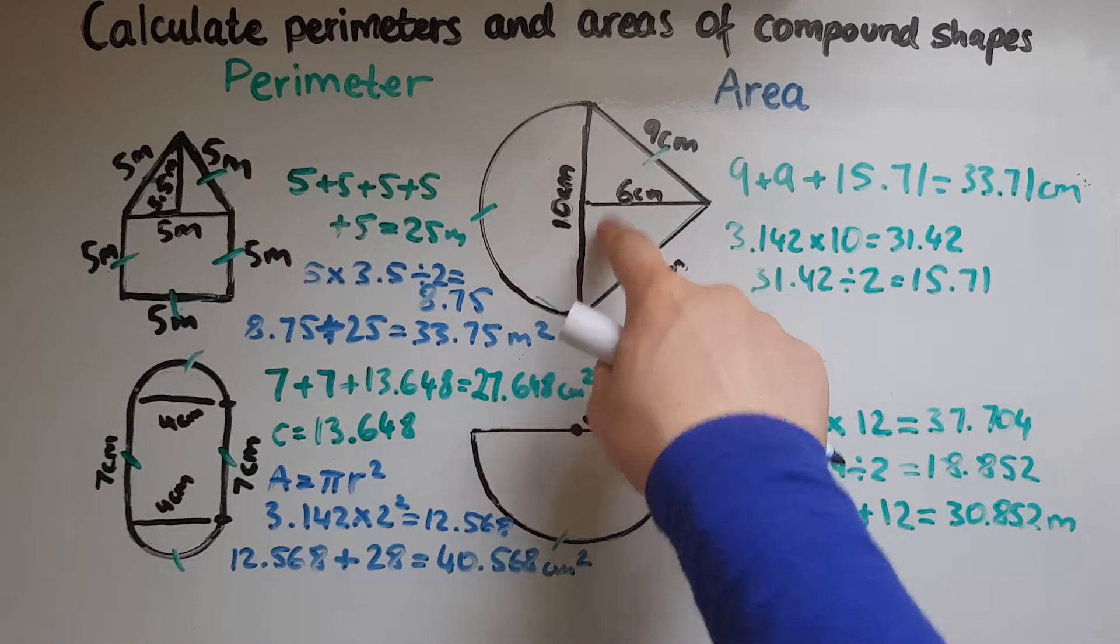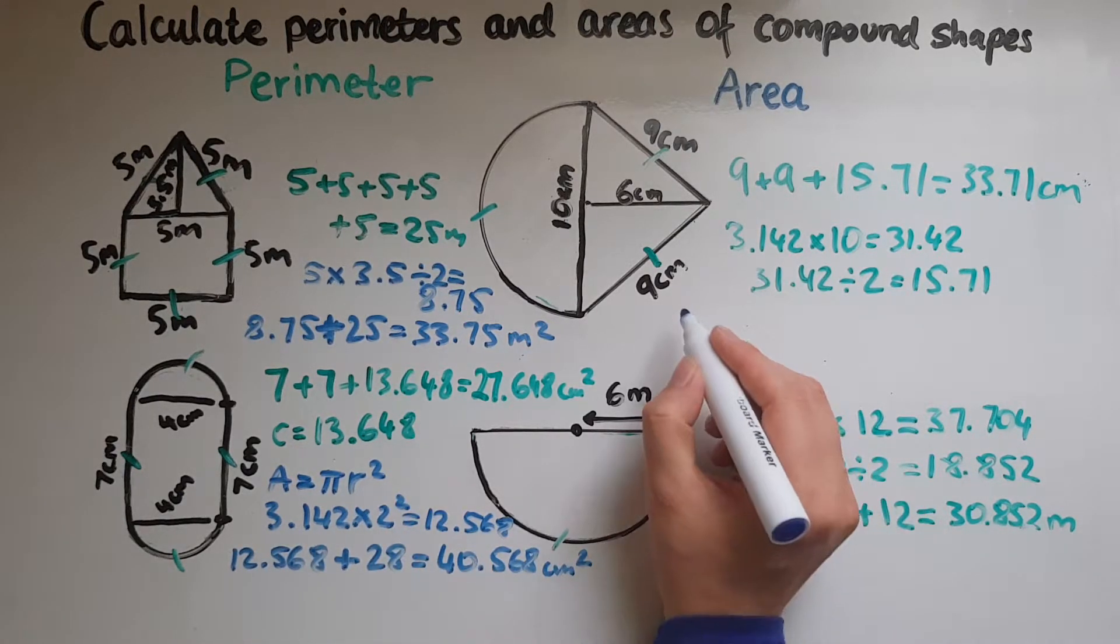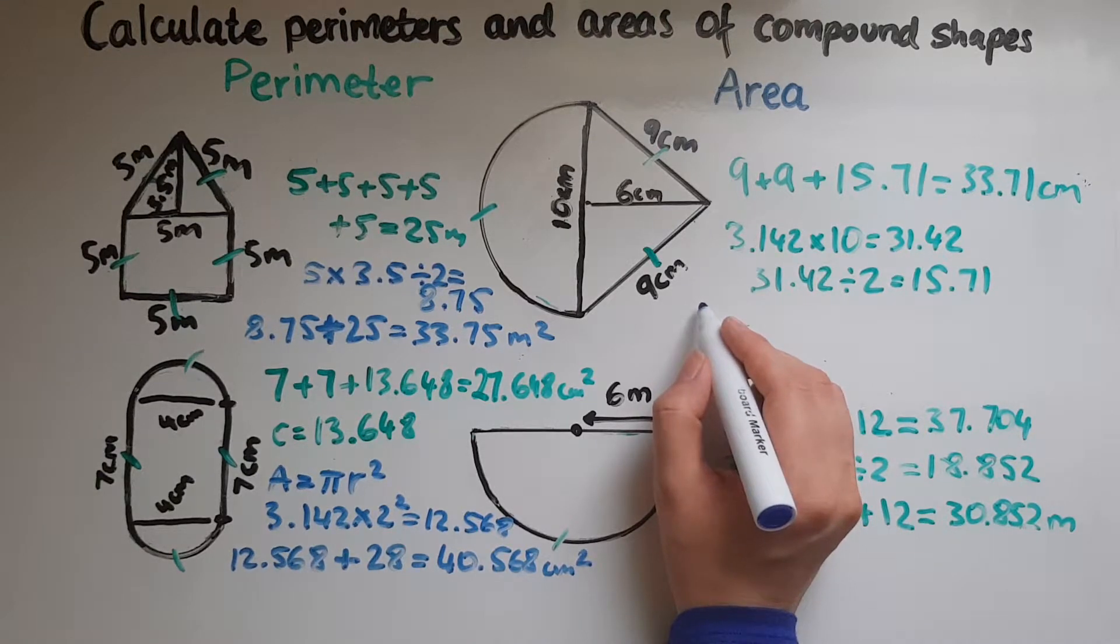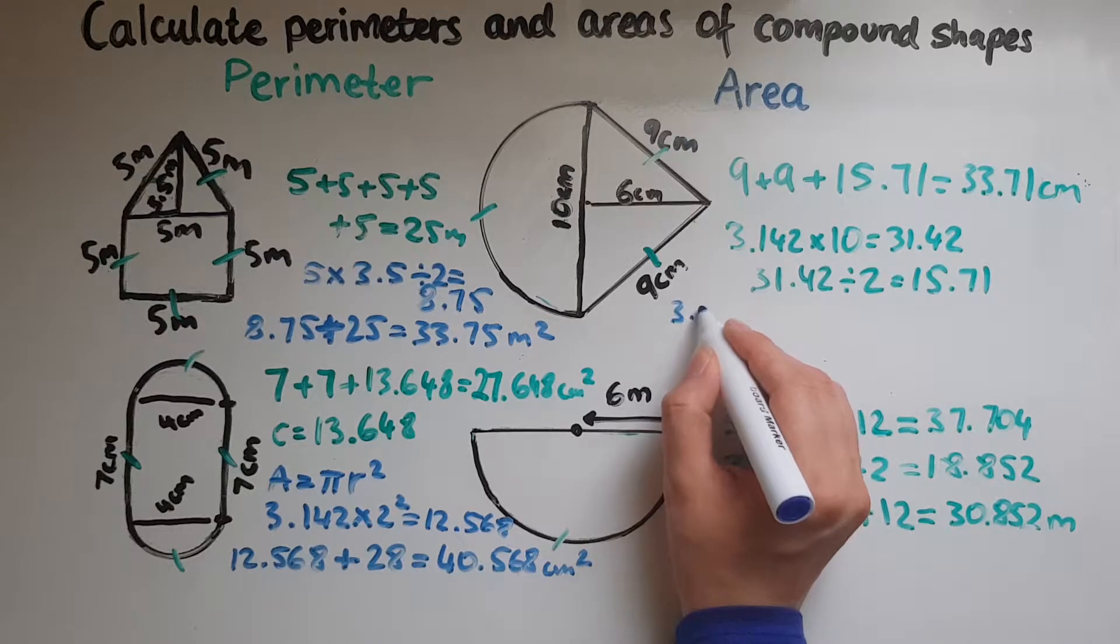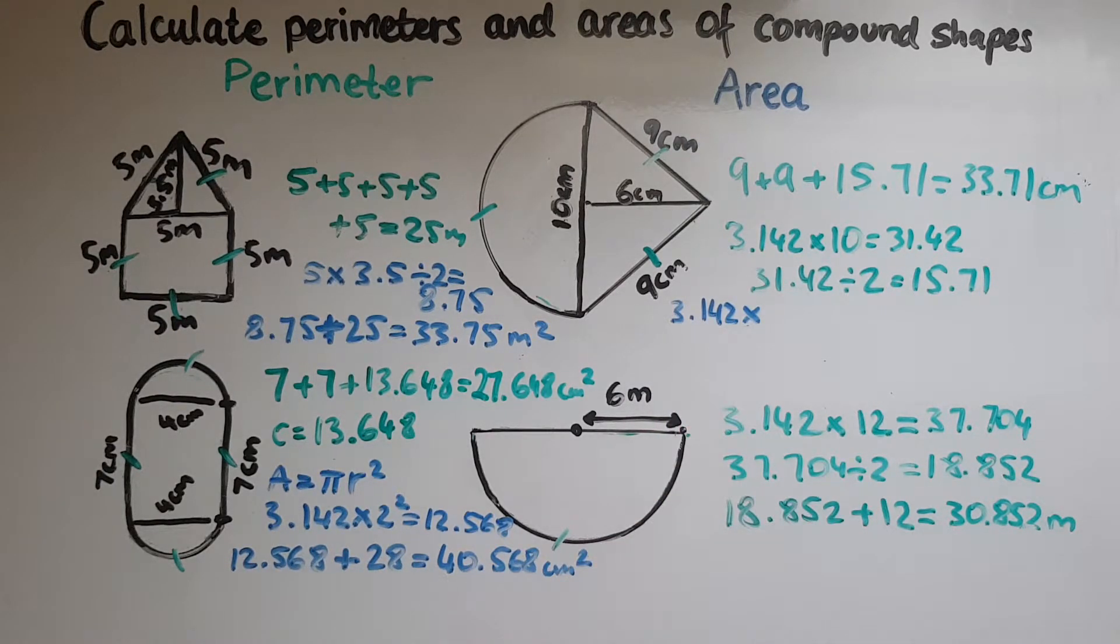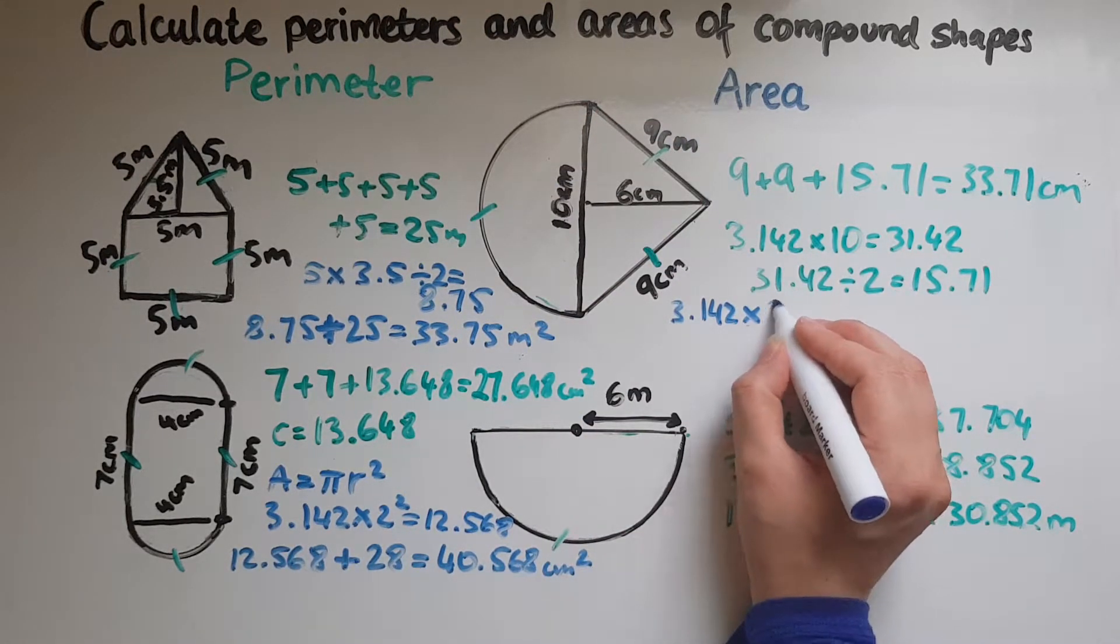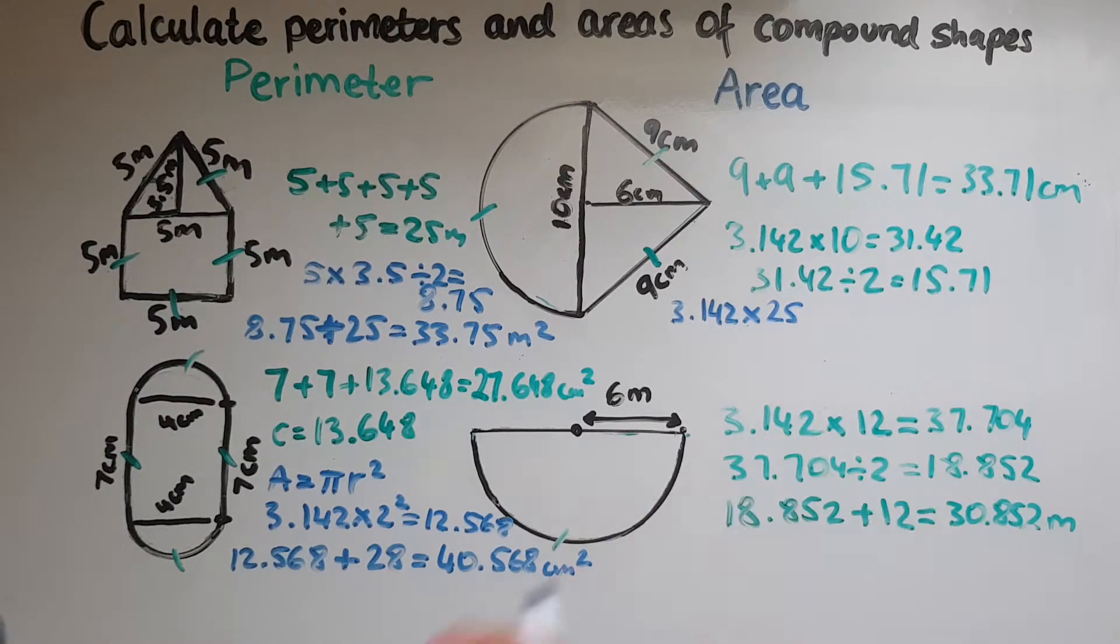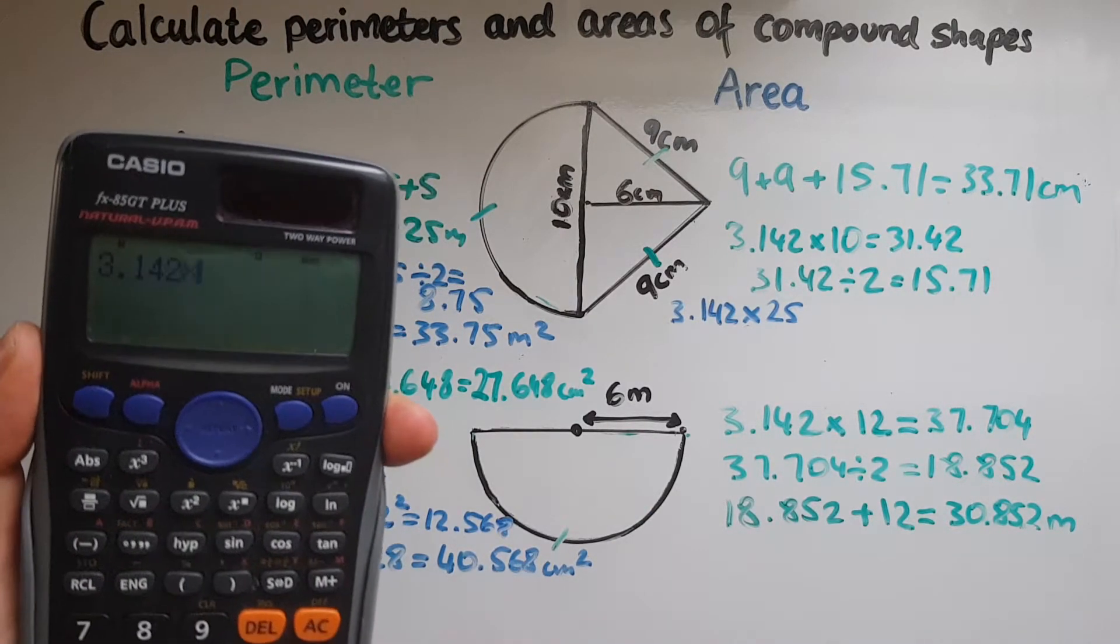Now looking at the other one, it's made of half a circle and a triangle. The area of the circle again we find by multiplying pi r squared.